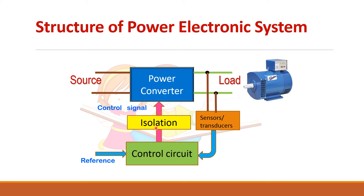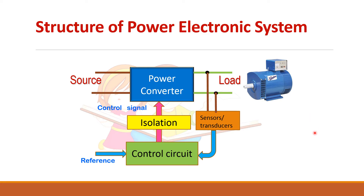An important thing is you have to isolate this control circuit from the power circuit, because the control circuit is a low-voltage circuit and the power circuit is a high-voltage circuit. Any disturbances in the power circuit can affect the low-voltage control circuit. So you need to use optocouplers or isolation transformers to isolate the control circuit from the power circuit. The function of a power electronic system is to regulate the load as well as provide isolation between the power circuit and the control circuit.